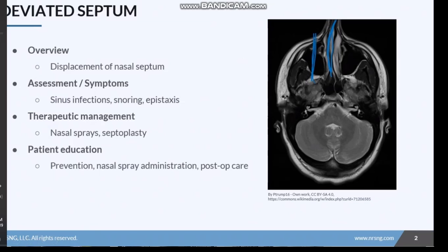Really only the more advanced cases actually cause symptoms such as sinus infection, snoring or sleep apnea, nosebleeds, facial pain, loss of smell, and with really severe cases patients can actually have difficulty breathing. If the patient does have symptoms, nose sprays are usually tried before surgical management. Surgical management is usually a septoplasty — a procedure that straightens the nasal septum and repositions it in the middle of the nose, and is only used if nasal sprays are ineffective.